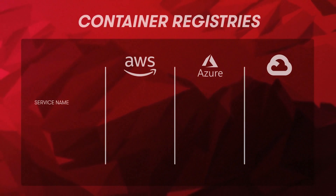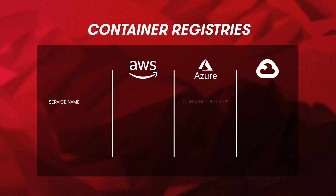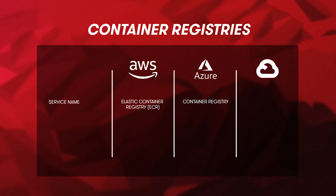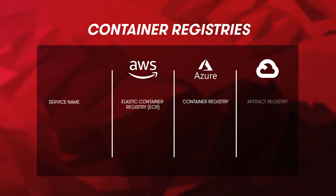On Azure, this container registry is simply called the Azure Container Registry. On AWS, it's called the ECR or Elastic Container Registry. GCP also has a container registry; however, given that teams need to manage more than just containers, GCP offers a next-gen container registry referred to as the Artifact Registry. The Artifact Registry is used not just for container images but for language packages such as Maven and npm, Debian packages, and operating system packages as well.